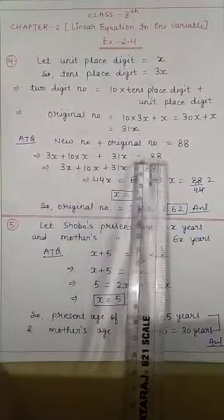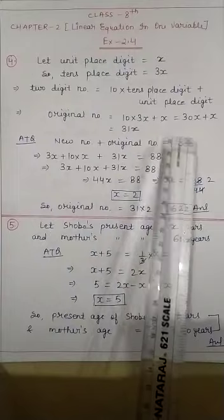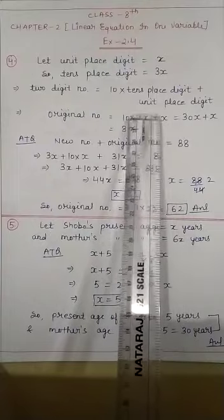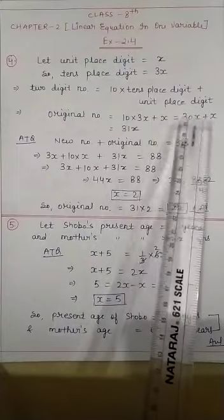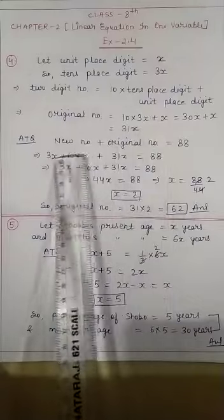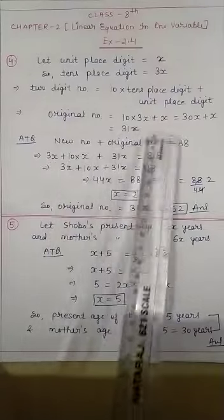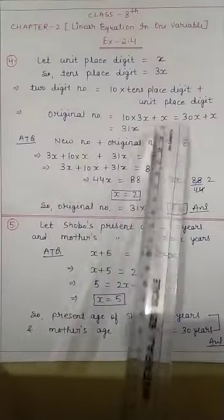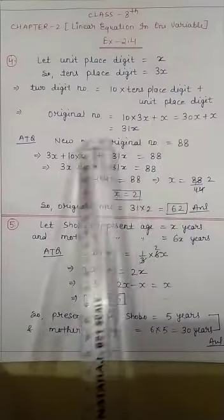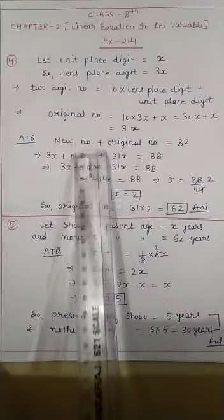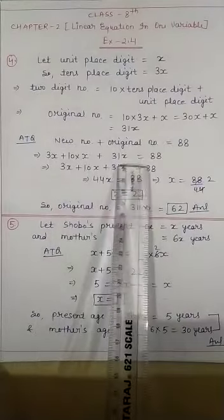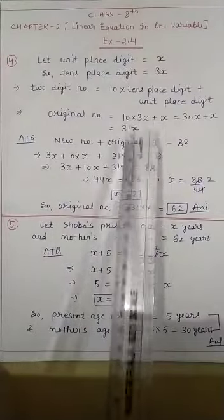As we interchanged the digits in the last question, the new number is 10 multiplied by the unit place digit, which is x, plus the tens place digit 3x. So the new number is 10x + 3x, and the original number is 31x.